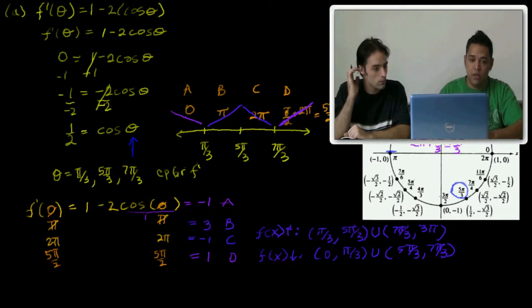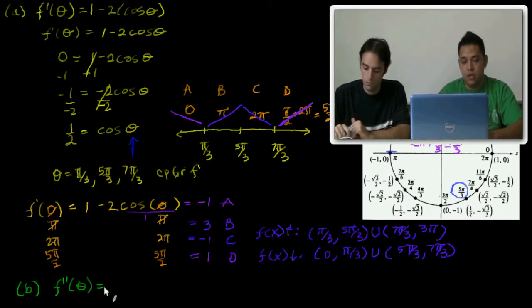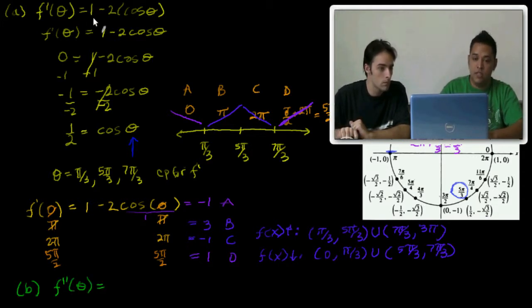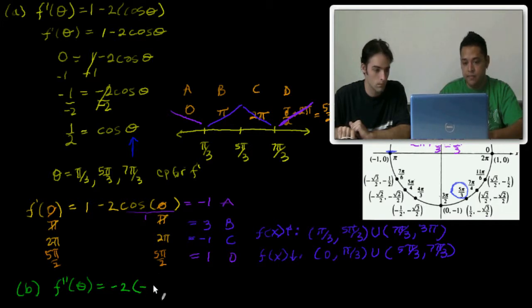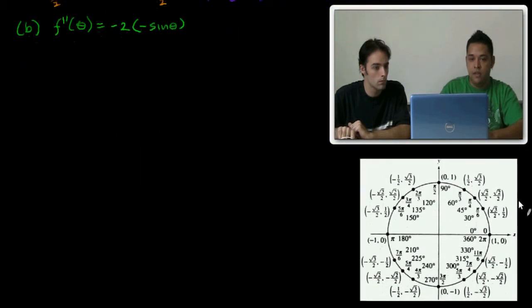We need the first derivative so that we're able to take the derivative of this and that's going to turn into our second derivative. The derivative of a constant is 0, this just drops. The derivative of this would be negative 2 times the derivative of cosine of theta is negative sine theta. So I can rewrite that as f''(θ) = 2sin(θ).